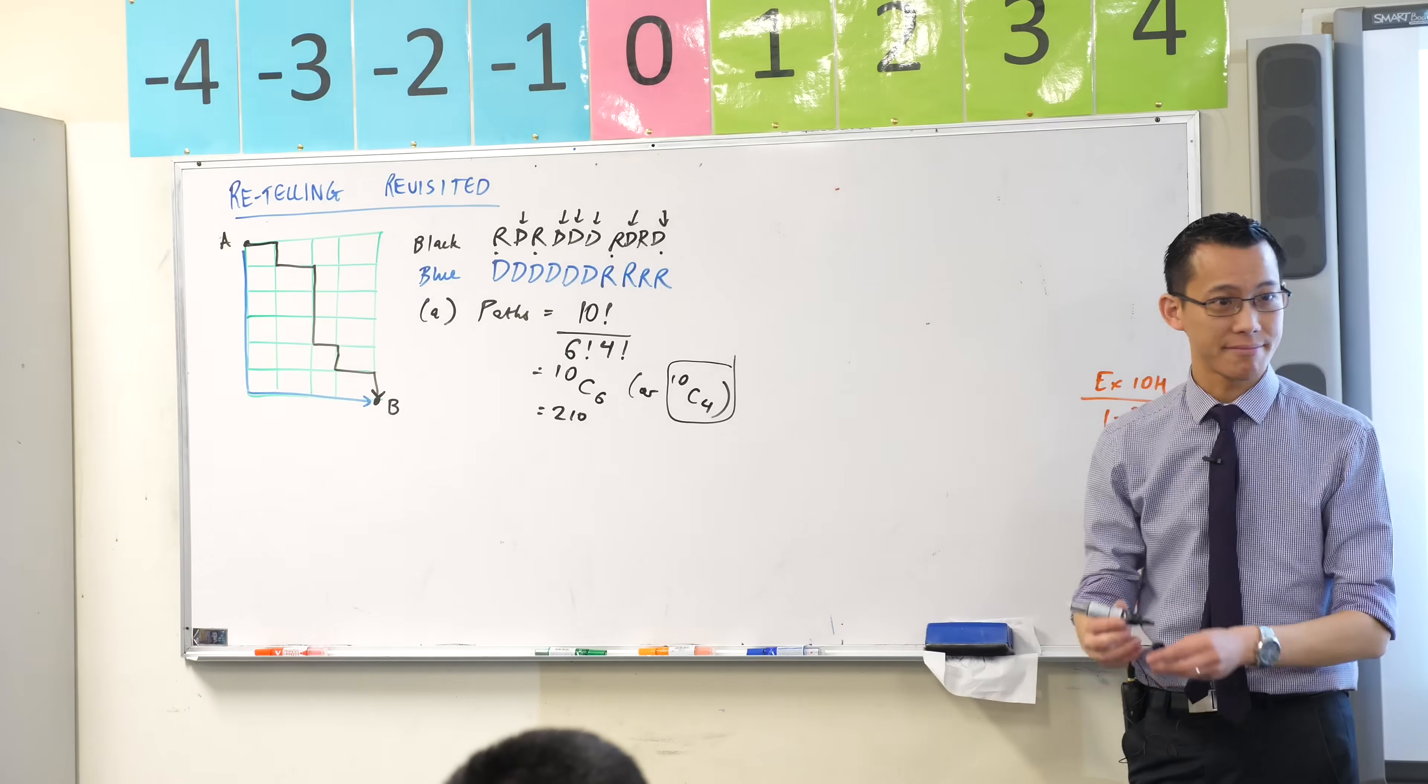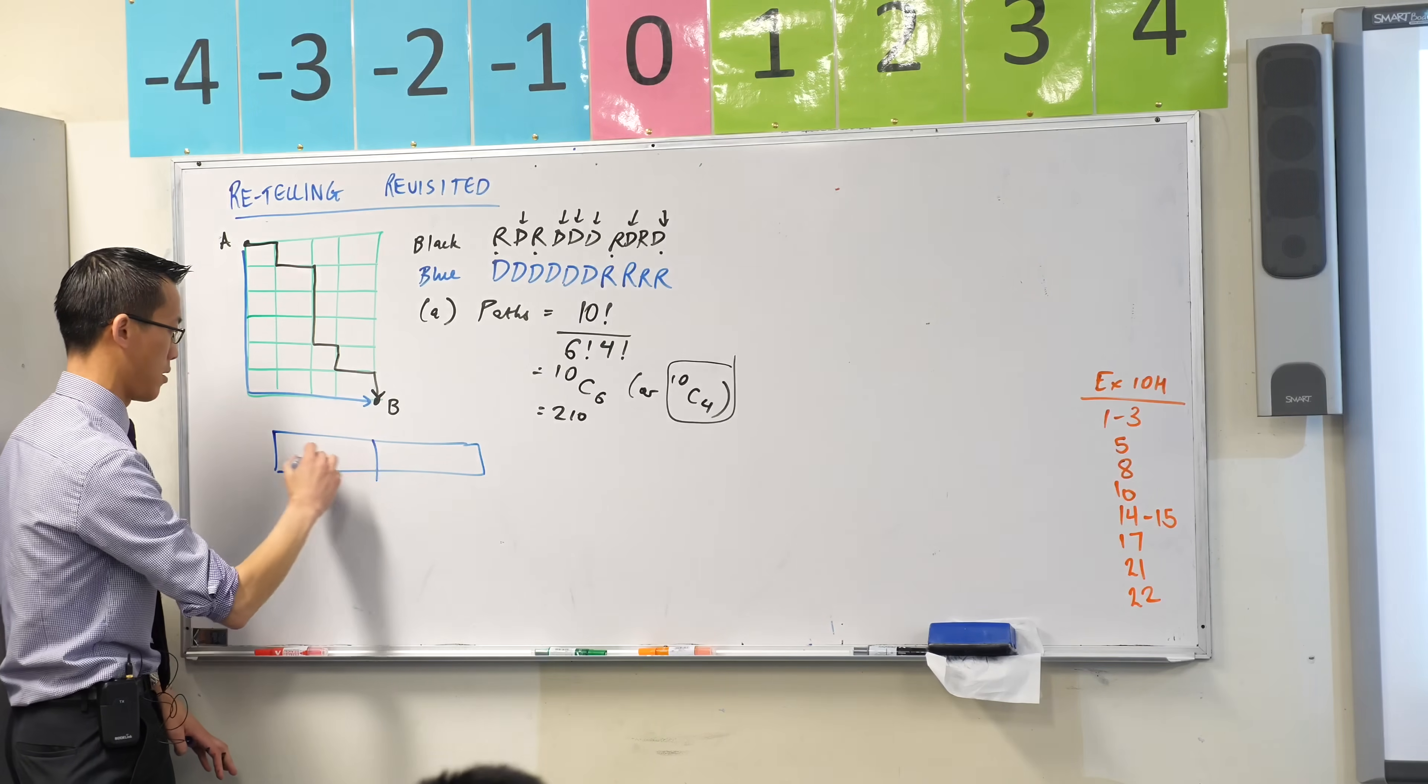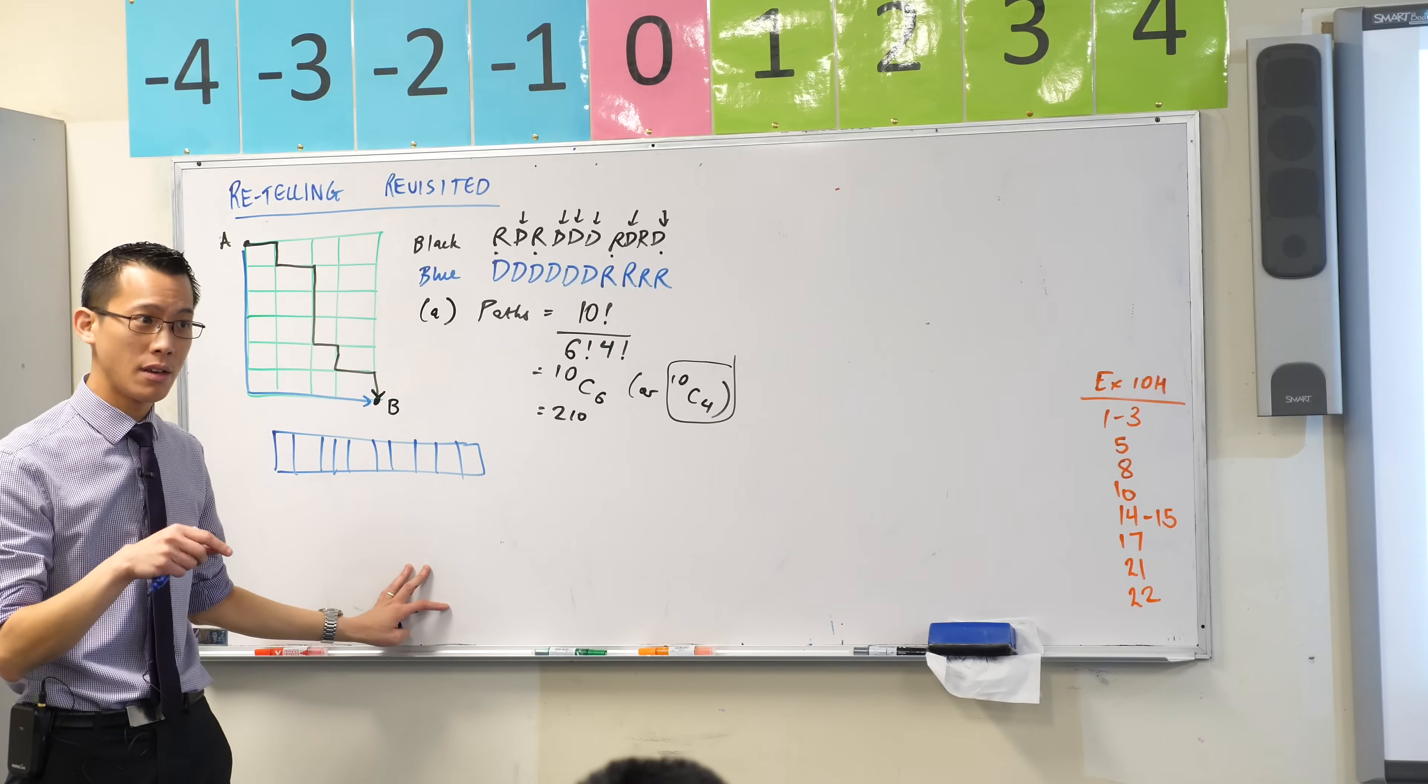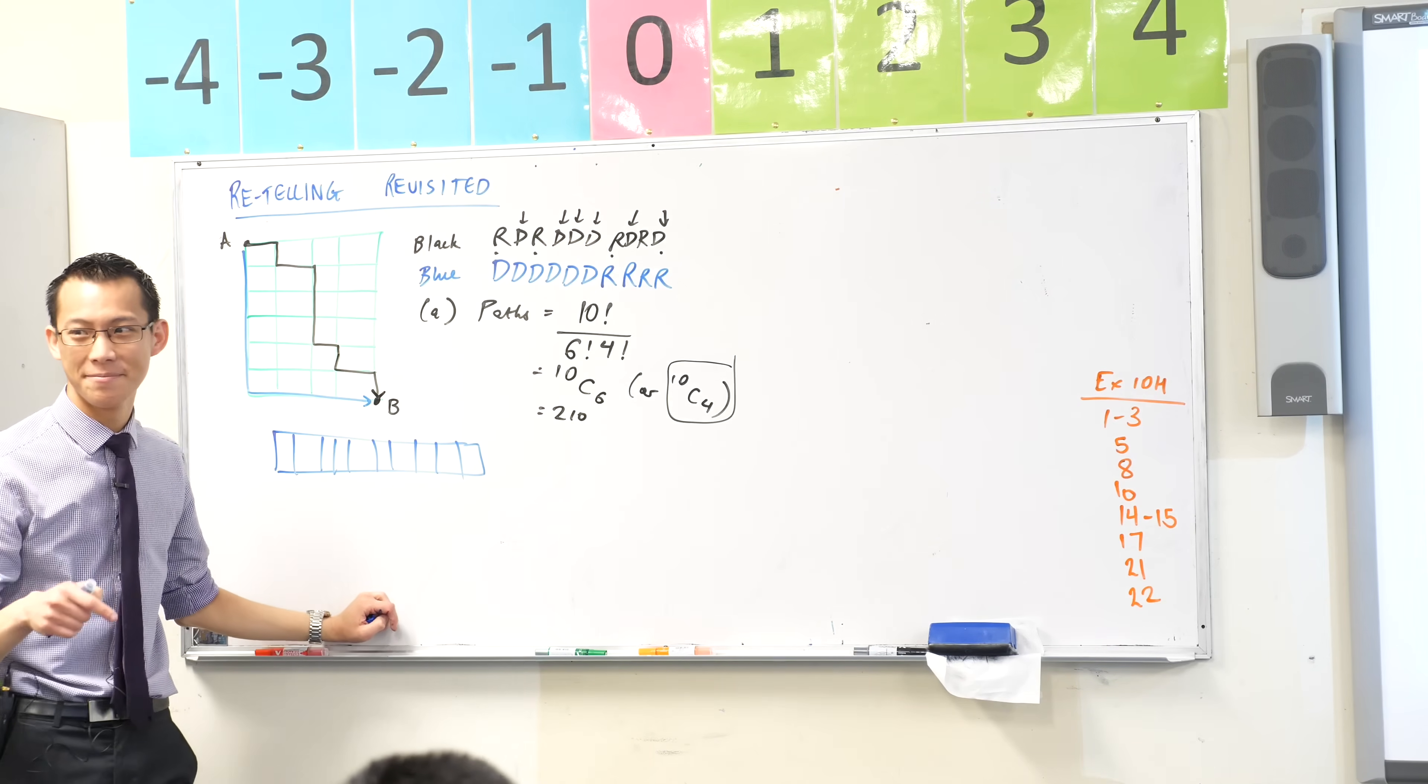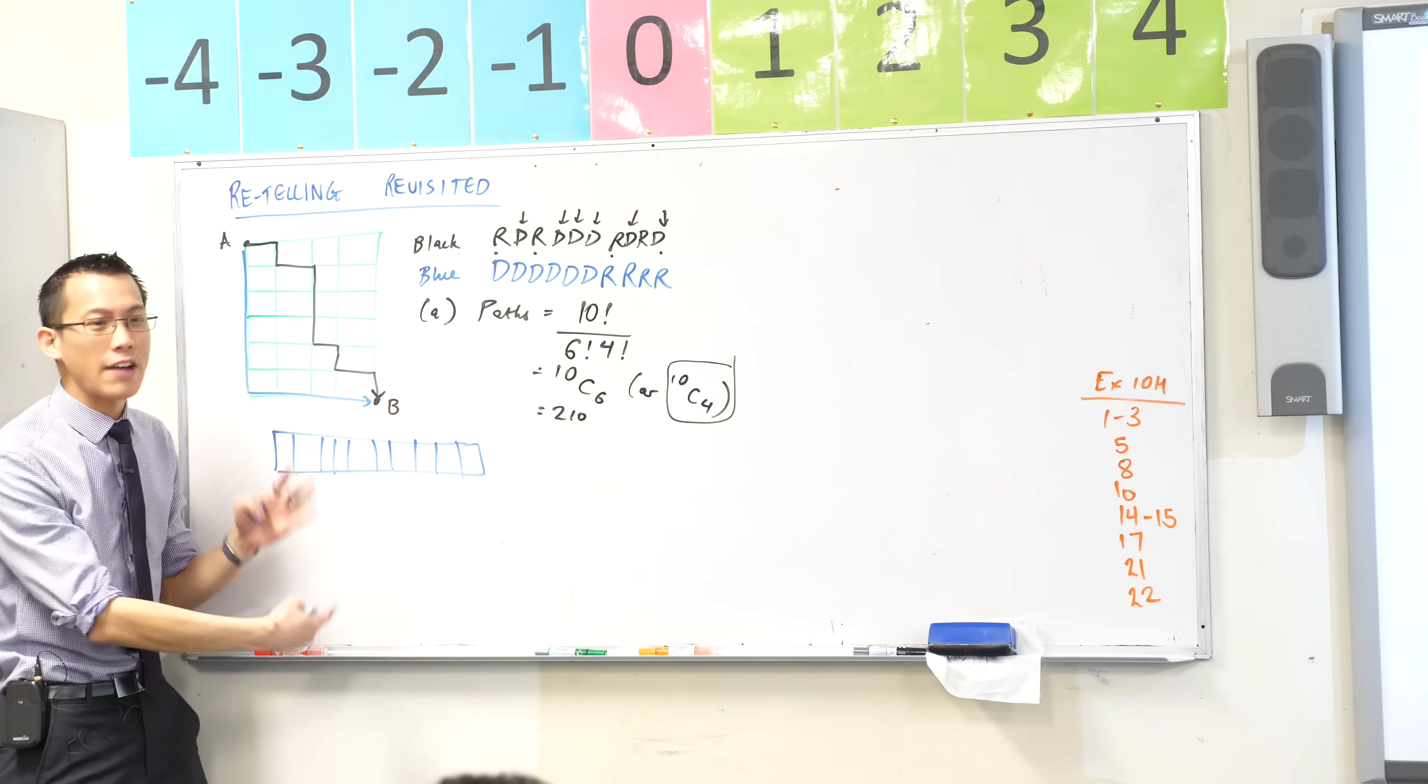To create all the different paths, you always have to take 10 steps. So let me just draw out 10 steps: 1, 2, 3, 4... there we go, 10 steps. Now some of these have to be right steps. How many of them have to be right steps? Come on then, help me out. How many of these 10 steps have to be to the right? Have a look, it's always the same number every time. Four of them have to be to the right. Good work. Four of them, you have to pick four.